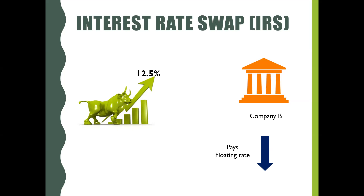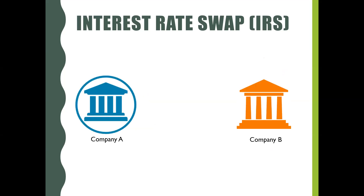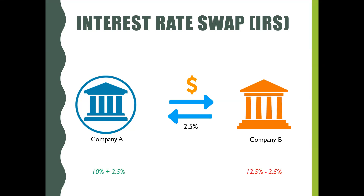Hence, to hedge themselves against the adverse movement of interest rates, both parties get into a contract for an agreed time period to exchange the cash flows arising out of the difference in the interest rates. In this scenario, if the interest rate increases to 12.5%, then company B will pay the 2.5% difference to company A.